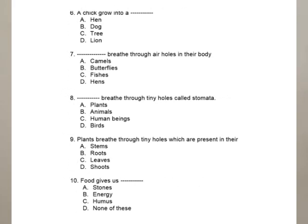Question 7: the dash breathed through air holes in their body. In your book, insects and grasshoppers breathe through air holes. Butterflies come under the category of insects, whereas camels, fish, and hens do not breathe through air holes. So butterflies is the right answer for question 7.